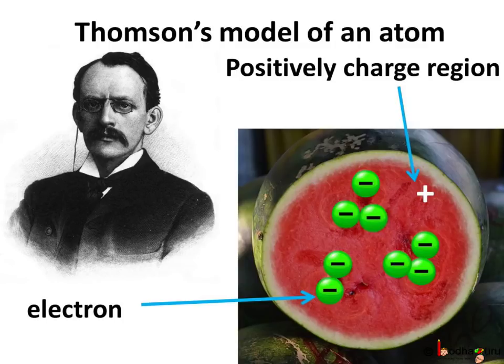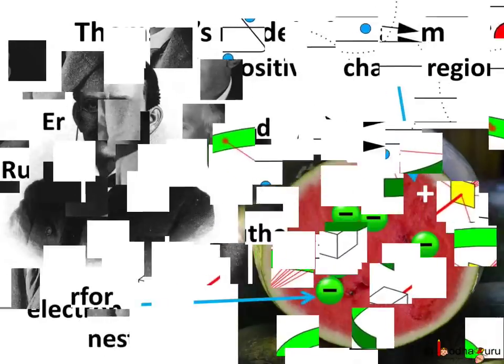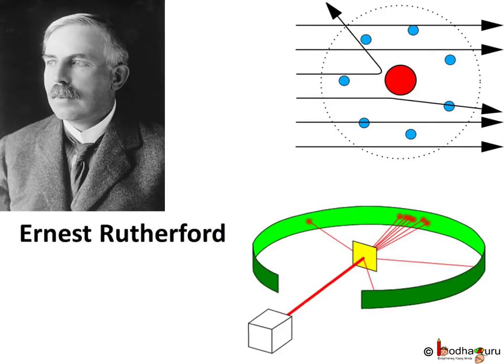But his model was soon proven wrong. Ernest Rutherford sent an alpha ray through a very thin gold foil. Alpha ray is a flow of very tiny particles. Actually alpha particles are doubly charged helium ions. We will learn about it more later.